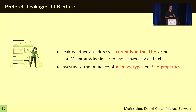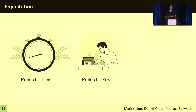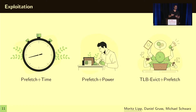With this leakage, we can now build three attack primitives: Prefetch+Time, and Prefetch+Power, where we use the power side-channel information when we don't have access to a high-resolution timer. For Zen 2, we need to handle things a bit differently, so we have TLB Evict+Prefetch in order to work around the TLB caching behavior on Zen 2.